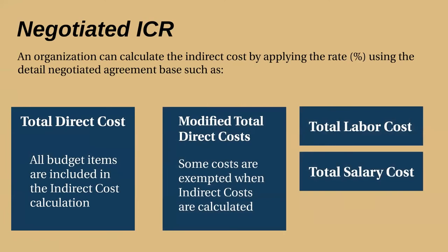If the indirect cost rate is calculated on a total direct cost basis, then all budget items are included in the indirect cost calculation. If the indirect cost rate is determined on a modified total direct cost basis, then some costs are exempt when the indirect costs are calculated.